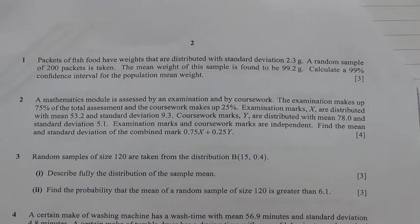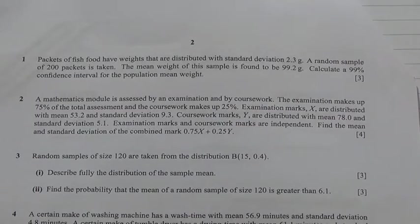Packets of fish food have weights that are distributed with standard deviation 2.3 gram. A random sample of 200 packets is taken. The mean weight of this sample is found to be 99.2 grams. Calculate a 99% confidence interval for the population mean weight. Okay, so let's do this question now.